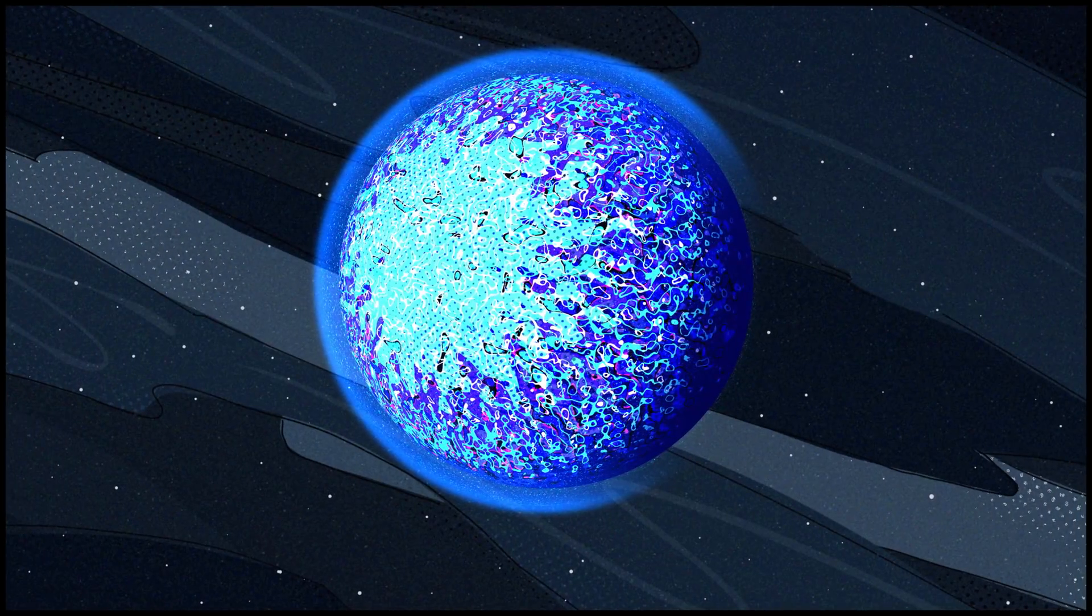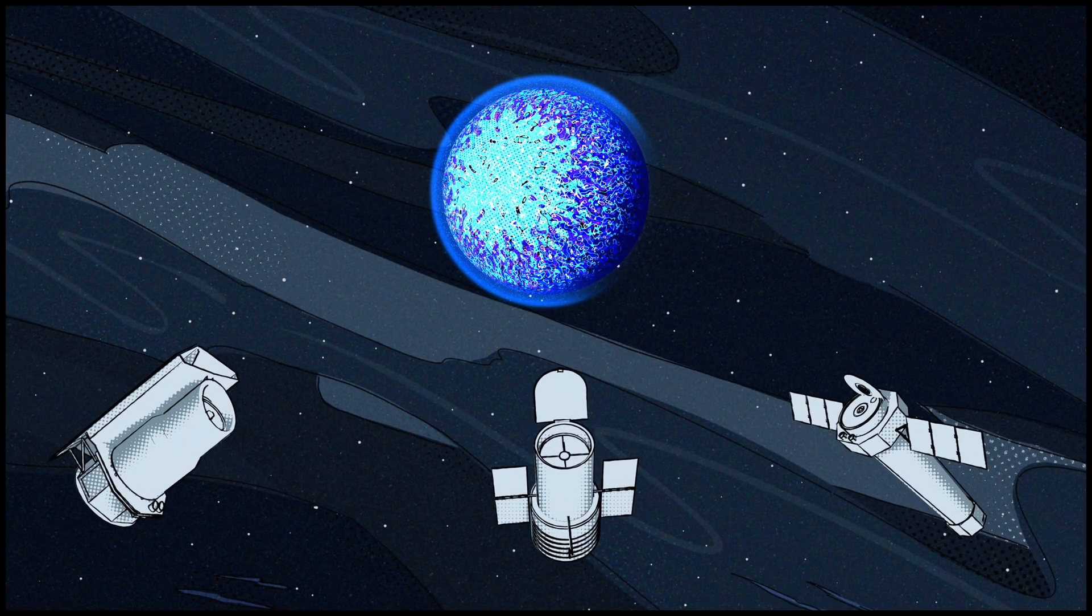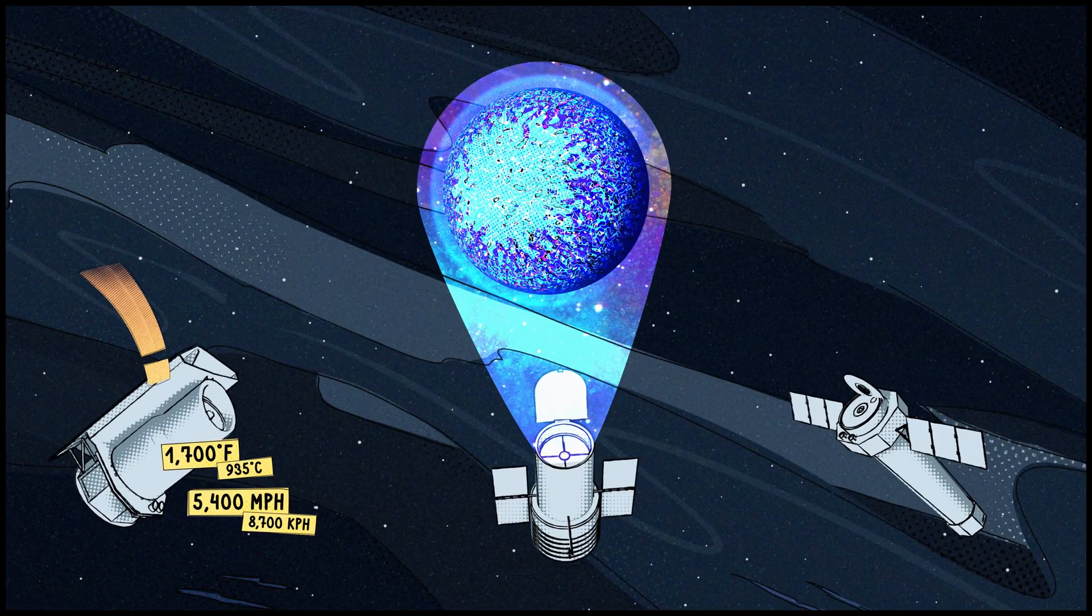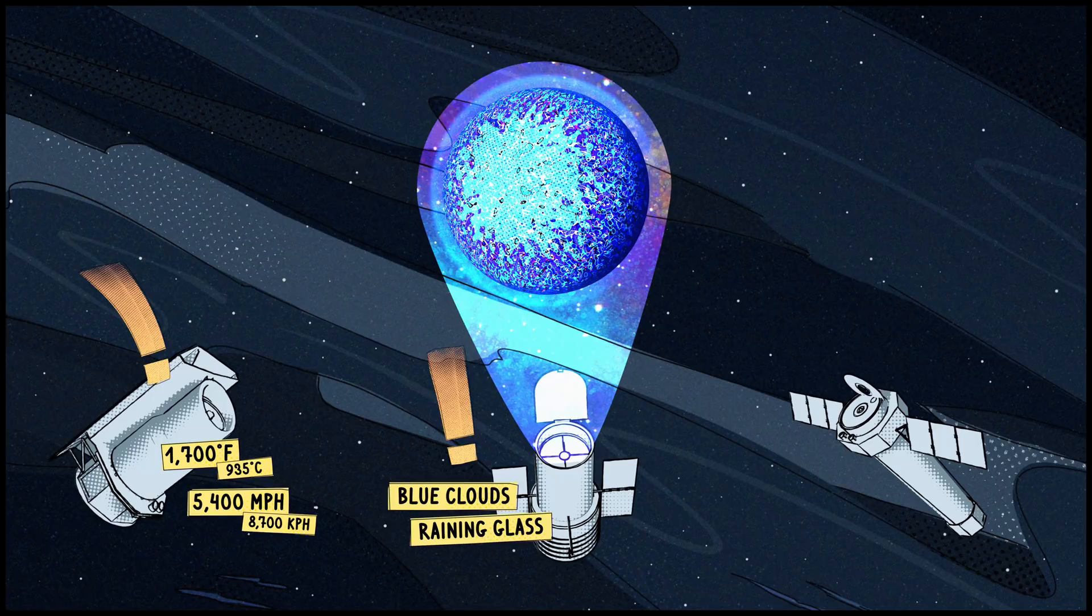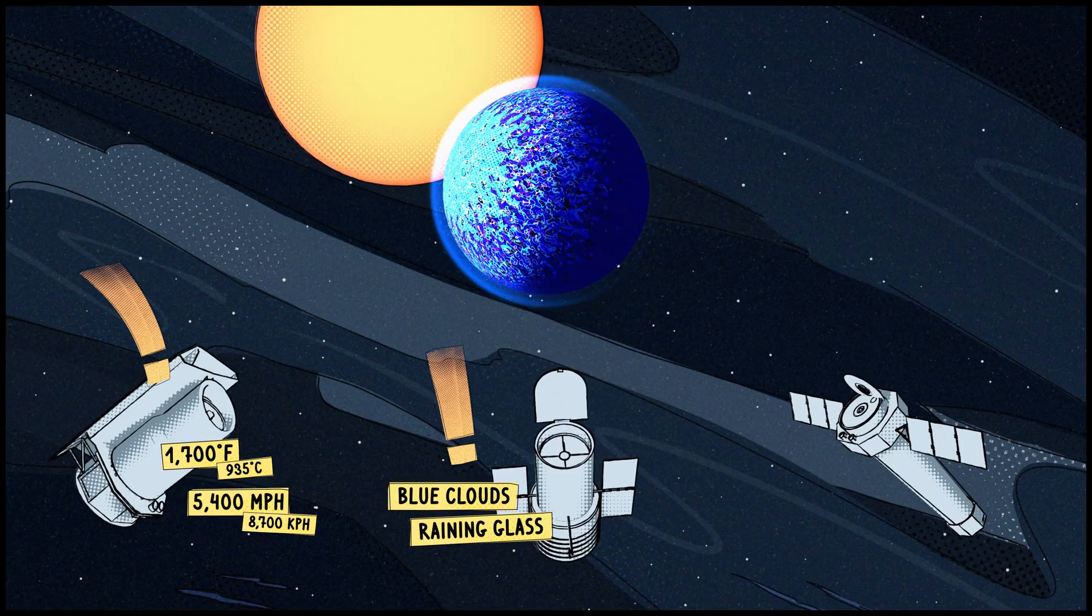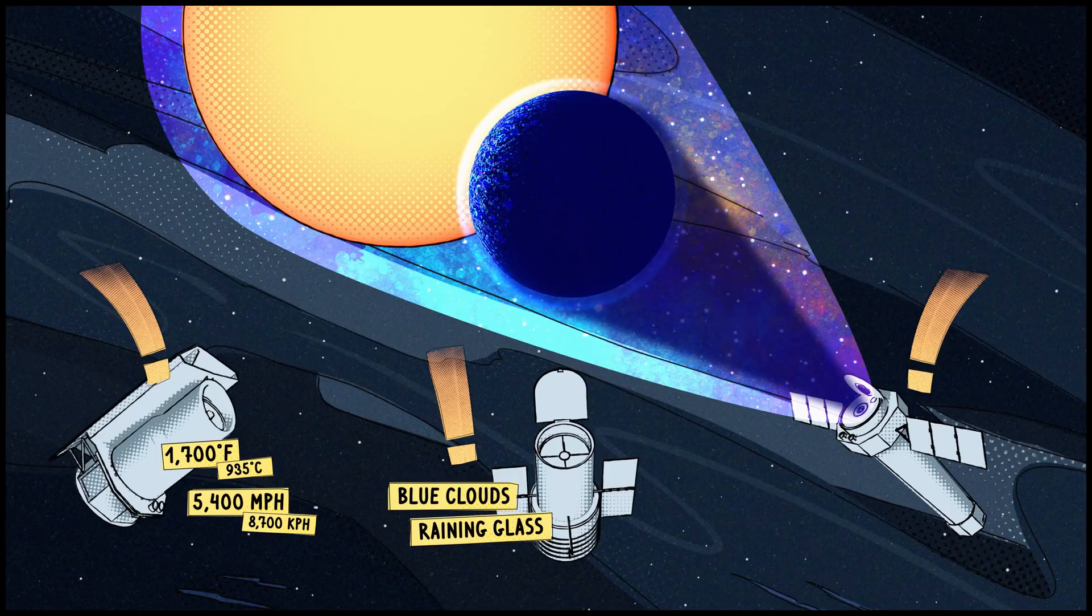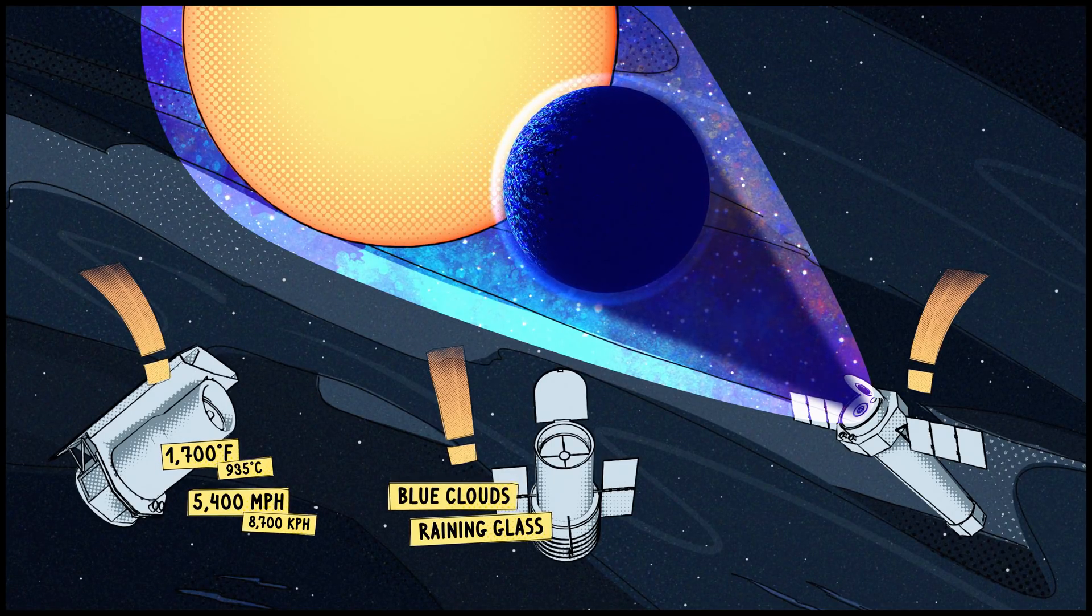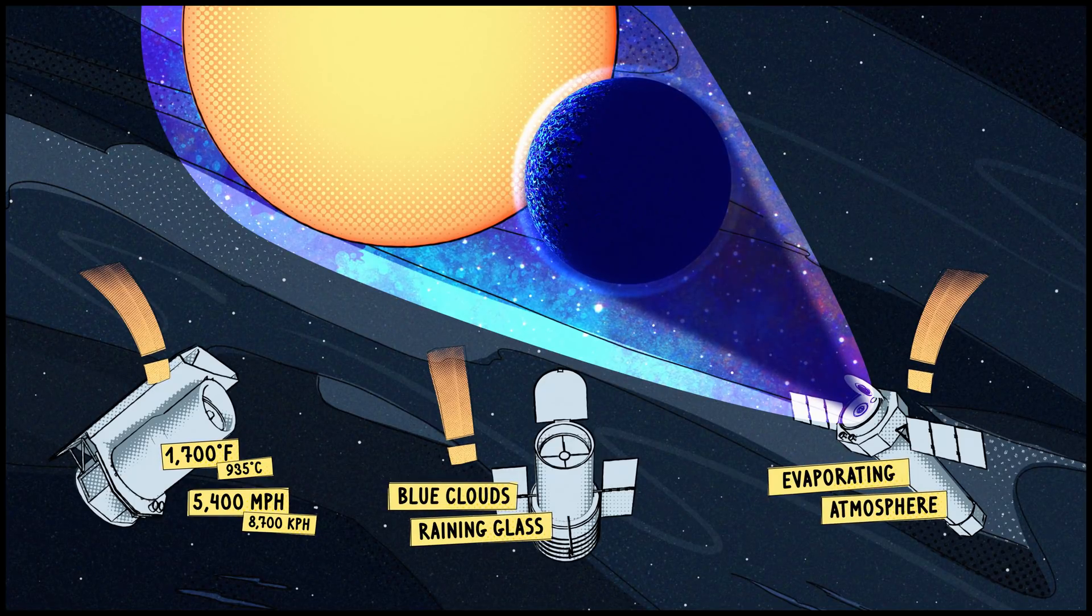HD 189733 b has been a favorite target of our space telescopes. Spitzer measured its temperature and winds. Hubble discovered that the planet's clouds are deep blue due to the raining glass or silicates. And Chandra observed its star in x-rays, watching the planet's shadow as it passed in front of the star - a much larger shadow than previously thought, because huge amounts of the planet's atmosphere are evaporating into space.